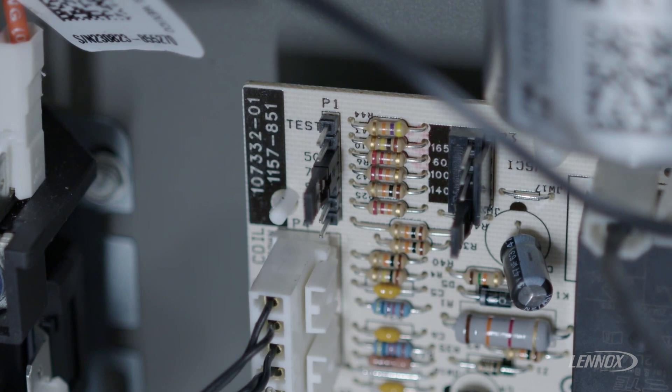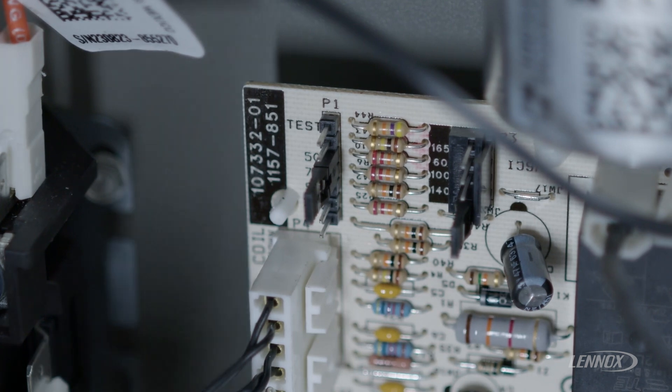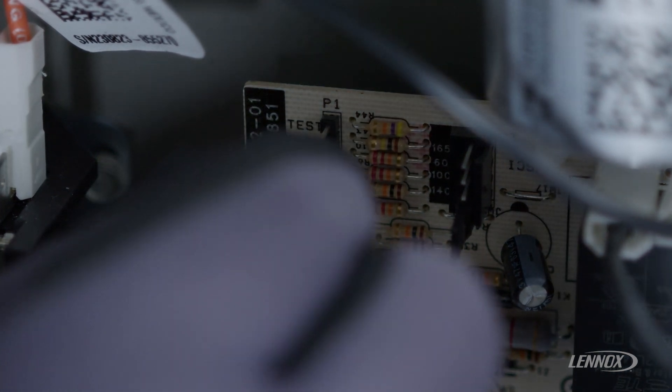So to test the defrost mode, we're simply going to remove the jumper from the defrost termination temperature and place it across the test pins.